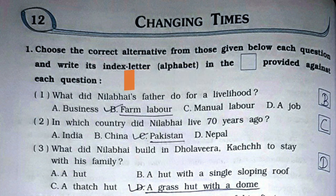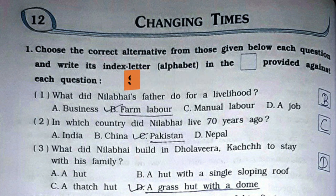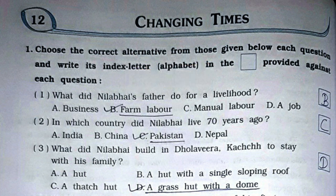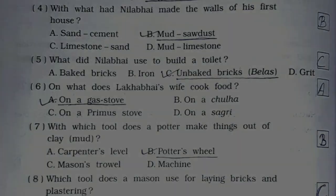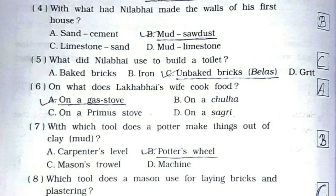First MCQ: What did Neela Bhai's father do for a livelihood? Its option would be farm labor. Second: In which country did Neela Bhai live 70 years ago? Its option is C, Pakistan. Third: What did Neela Bhai build in Dholavira, Kach to stay with his family? Its option would be a grass hut with a dome. Fourth: With what had Neela Bhai made the walls of his first house? Its option would be mud and sawdust.